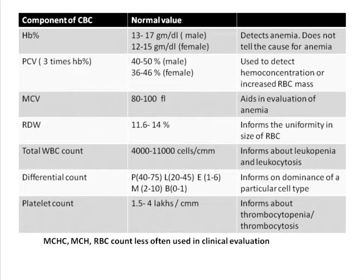Packed cell volume — roughly remembered as three times the hemoglobin percentage — actually tells about the concentration of red blood cells in the plasma. When the plasma concentration goes down or when the red blood cell mass increases, the packed cell volume increases. Clinically, it is used in situations of hemoconcentration or when you suspect an increase in the red blood cell mass.